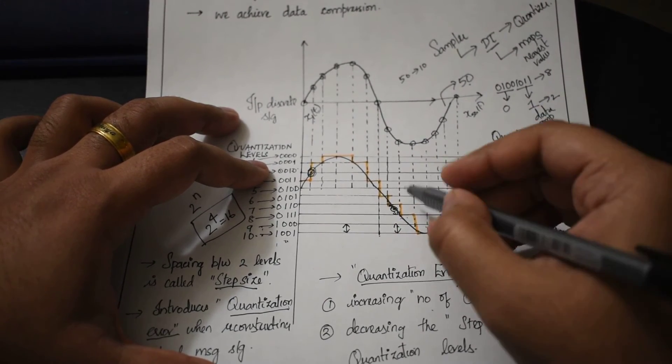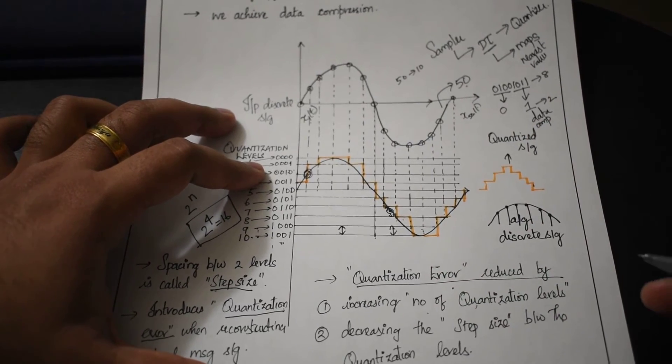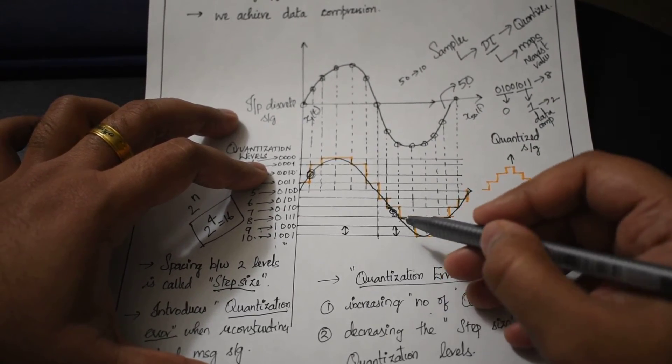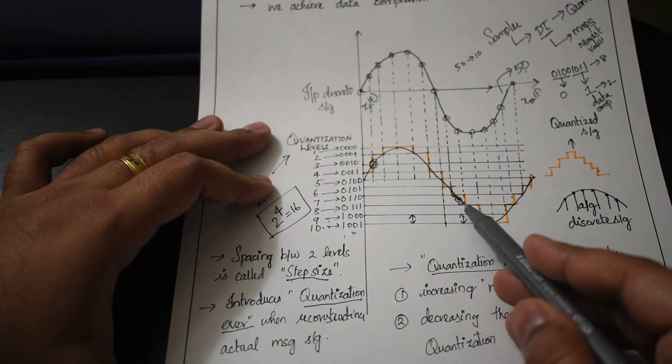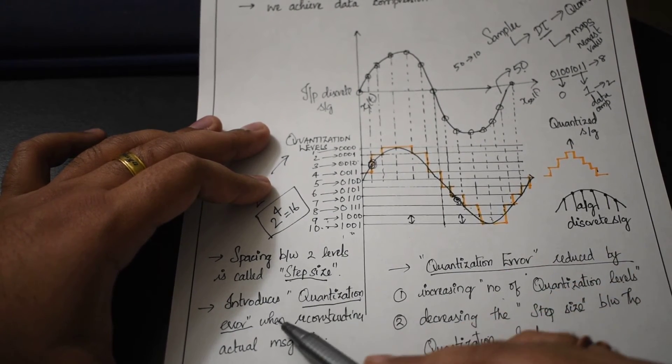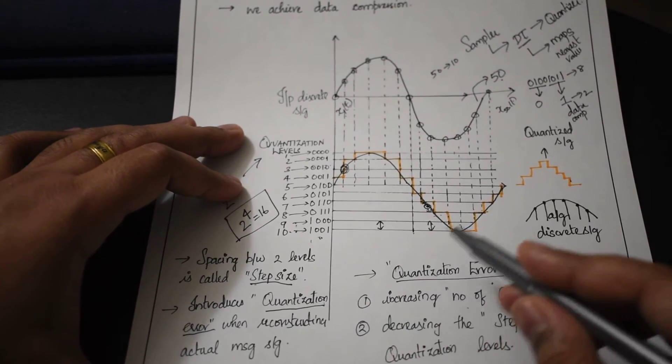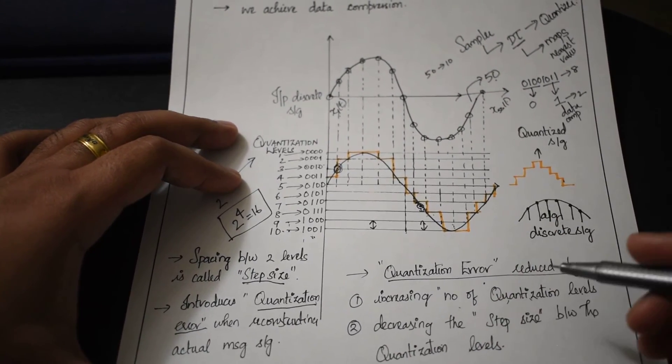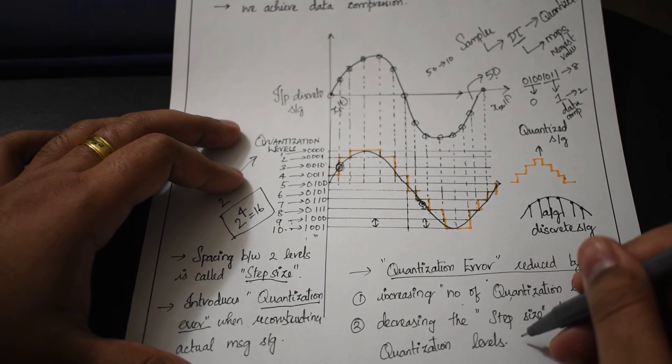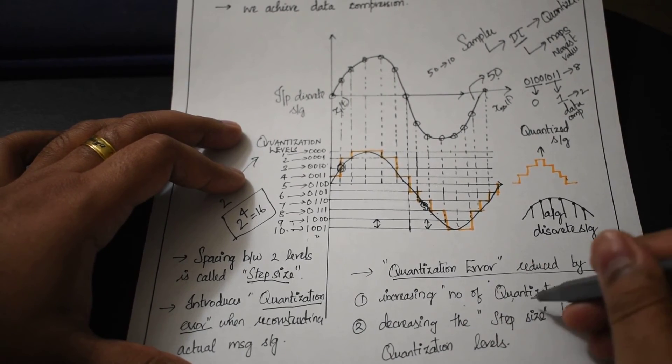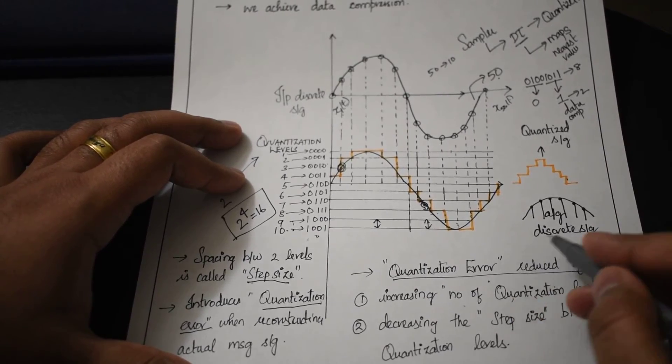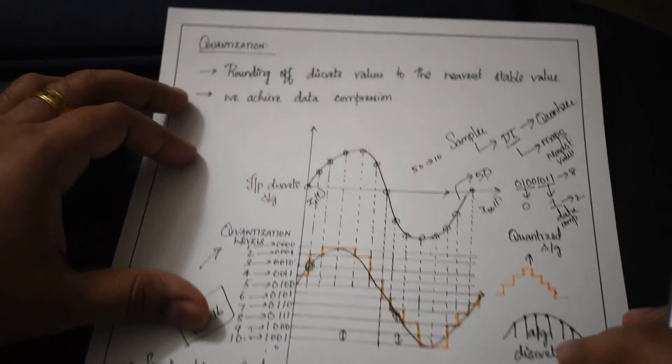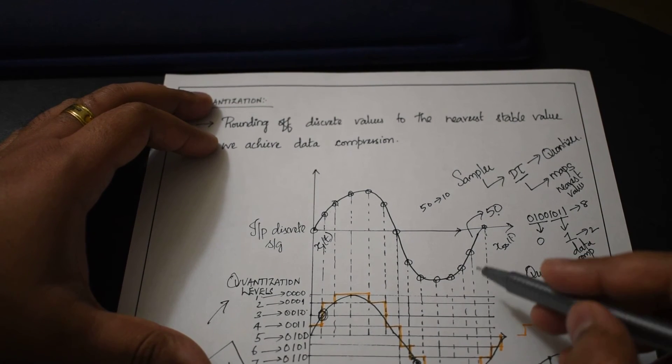If the step size reduces, the estimation error decreases, and the quantization error induced during quantization will be reduced. Decreasing the step size or increasing the number of quantization levels are equivalent. Once the signal is quantized, it's given as input to the channel encoder.